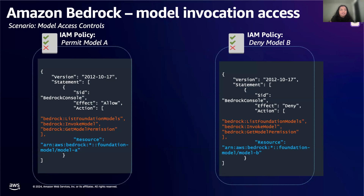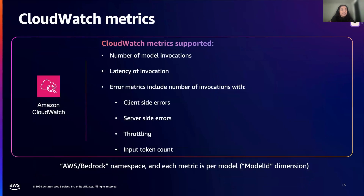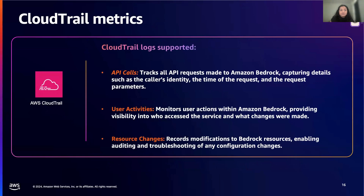Taking a step back from IAM and looking at the monitoring side of Amazon Bedrock, we have Amazon CloudWatch metrics. This service collects raw data and processes it into readable near real-time metrics such as the number of model invocations on the client and server side, system throttling, input tokens, and latency. We also have Amazon CloudTrail logging, which provides an audit trail of records of actions taken by a user role. You can track all API requests made to Amazon Bedrock, monitor user actions to see who accessed the service and what changes were made, and record all modifications to Amazon Bedrock resources to enable auditing and troubleshooting of any configurations that have been changed.